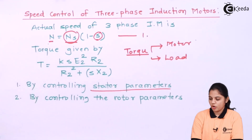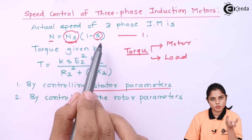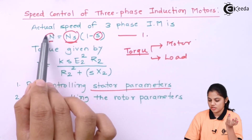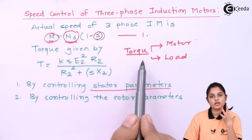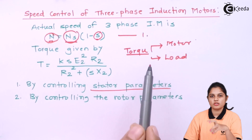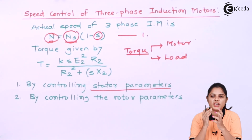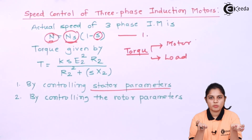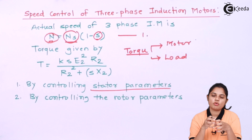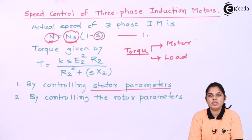So these are the different points. First, you can change the synchronous speed and slip to change the actual speed of the motor. Second, you can change the load connected to the motor to vary the speed. Third, you can vary different parameters of either the stator or rotor, because the operation of the stator and rotor will eventually control the speed of the motor. That is how the speed of the three-phase induction motor can be controlled.